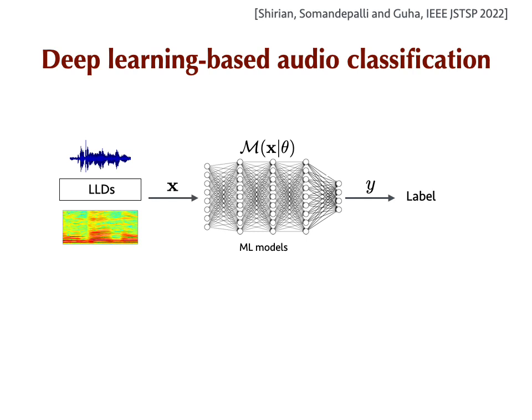The most common approaches for audio classification today is perhaps to feed either raw audio data, spectrograms, or some form of embeddings, even low-level descriptors, to a deep neural network. This deep model could be convolutional, recurrent, or even transformers, depending on your preference.